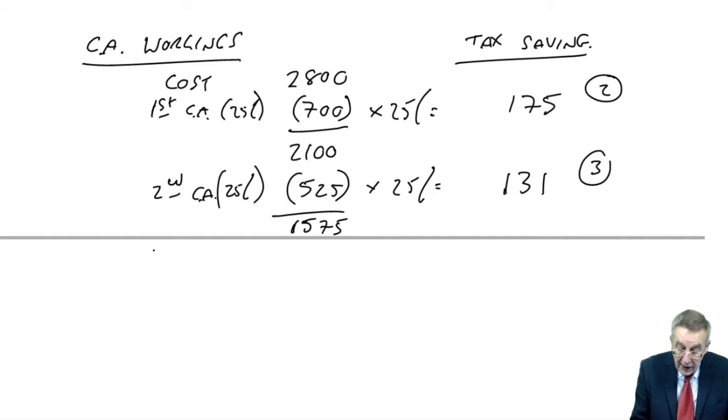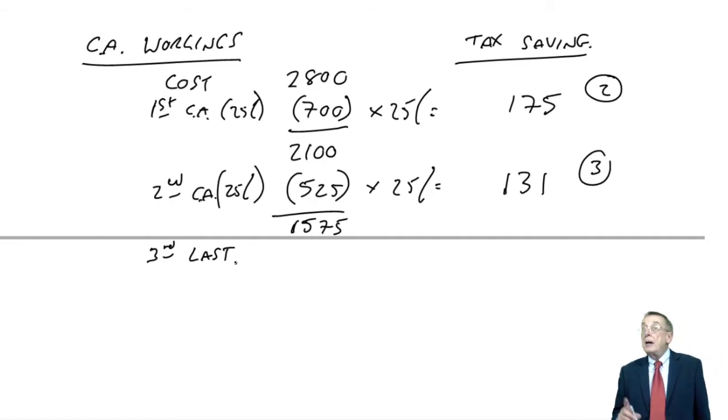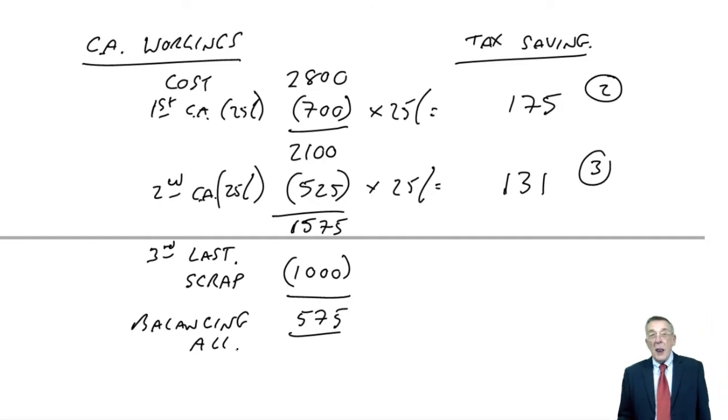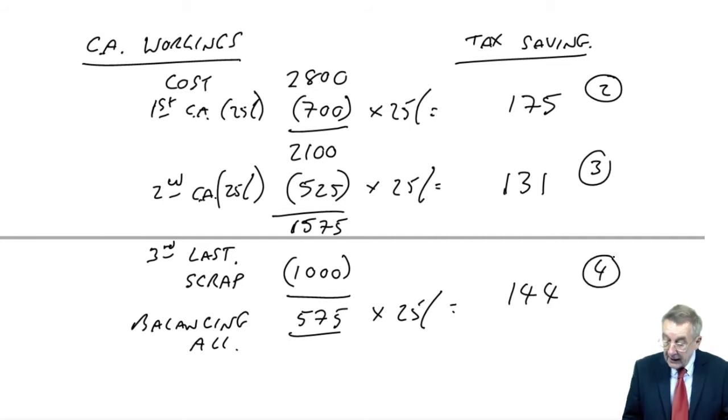But the tax saving, the tax rate here is 25%. So the tax saving will be 131, one year later at time 3. Carry on each year until the last. Well, the third year is the last year. And in the last year, remember, we simply subtract any scrap proceeds. And are there any sale proceeds? Yes, there are. The third line, there were a million. And so, as 575 remain, we get this balancing allowance of 575. The saving we'll make as a result at the tax rate of 25% is 144, one year later at time 4.